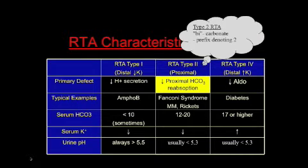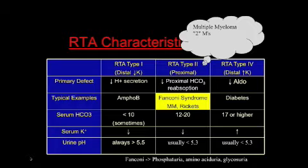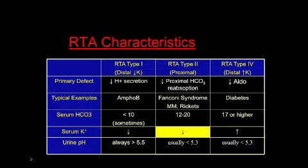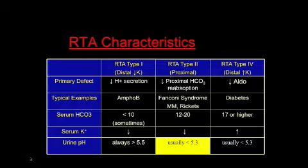RTA type 2 occurs proximally with decreased bicarb reabsorption. Associated conditions are Fanconi syndrome, multiple myeloma, and rickets. Serum bicarb is middle of the road, potassium is again low, and importantly, this time the kidneys can acidify the urine, so you'll see a pH a little bit lower, usually less than 5.3.